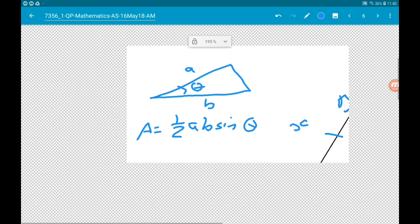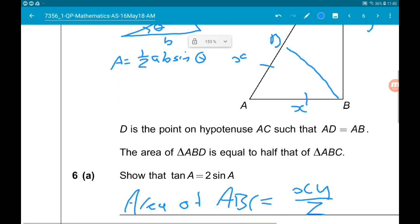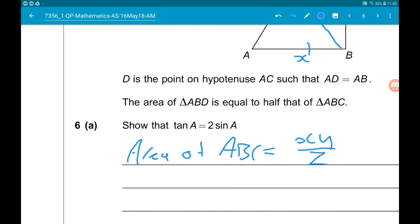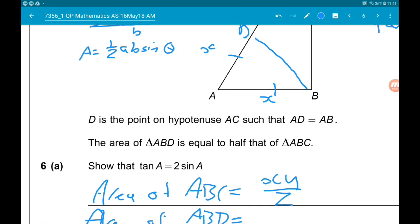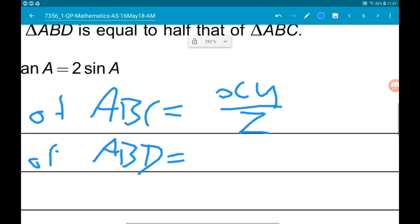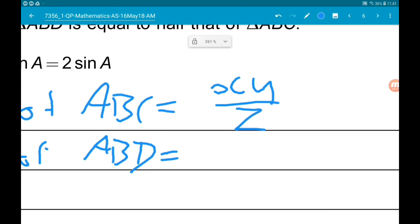the area of ABD is going to be one half times X times X sine of A. So that's X squared sine A over 2.